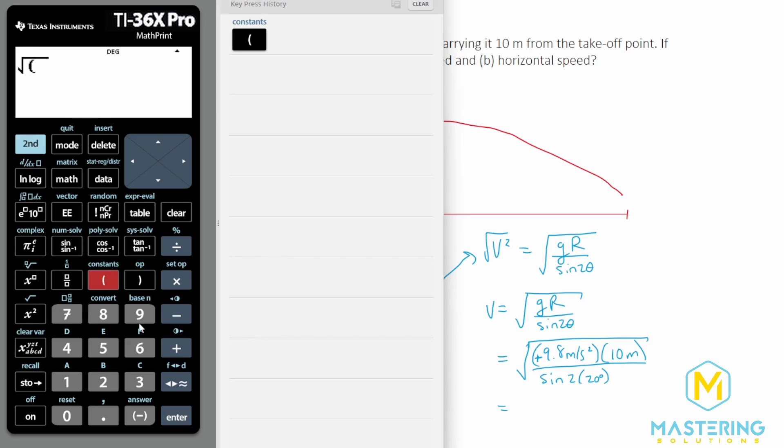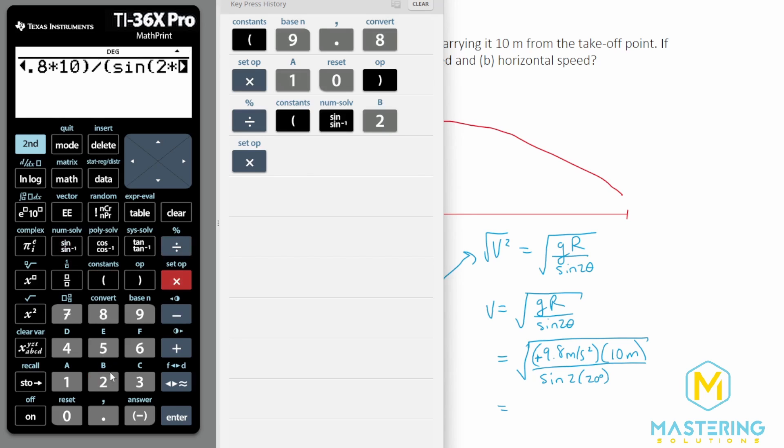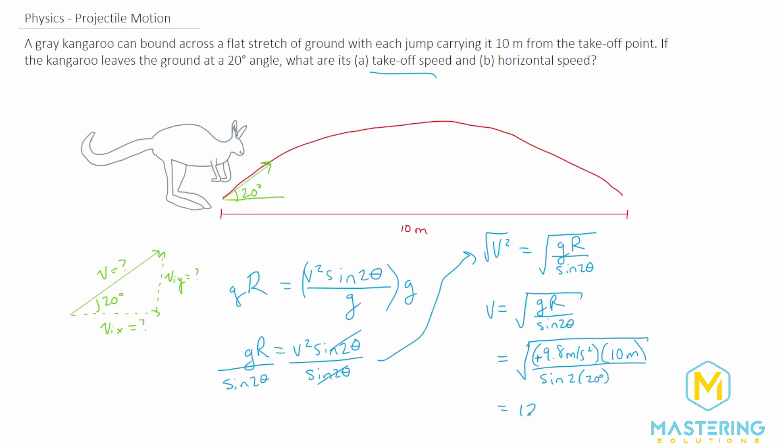So we have the square root of 9.8 times 10 divided by sine of 2 times the degree 20, which gives us 12.34. So we'll round that to 12.3 meters per second, is the answer for the takeoff speed for the kangaroo.